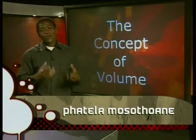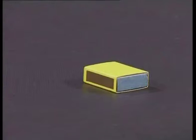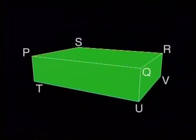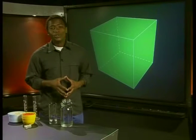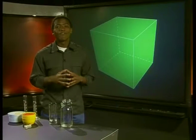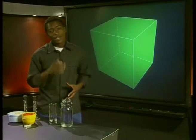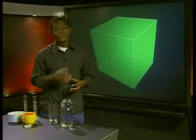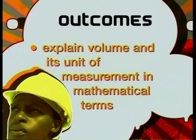So far, we have seen how we could replace certain objects from around us with models of the same proportions. We identified right rectangular prisms and found ways to represent them in a diagram. Now we're ready to use this to deepen our understanding of volume. By the end of this lesson, you should be able to explain volume and its unit of measurement in mathematical terms.